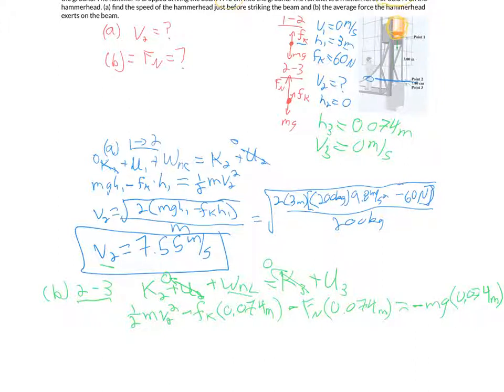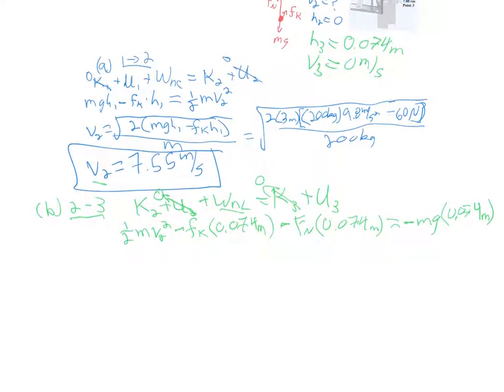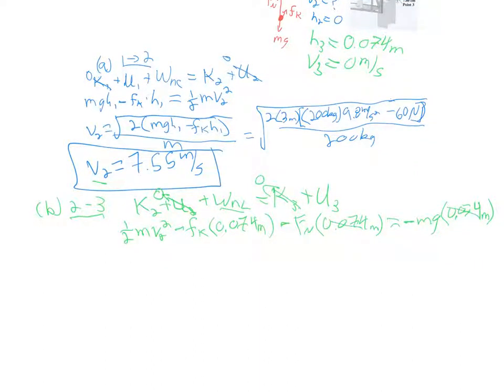The algebra might get a little hairy, but we're going to go ahead and do it. Maybe I'll divide through by my H value, so I just get H3 on the bottom. If I do that and pop the normal off to the other side, what I'm going to be left with is that the normal force then is equal to Mg minus the force of friction, and then plus this whole term that's left behind, which is Mv2 squared over 2h3.